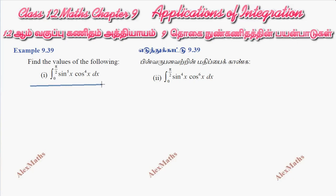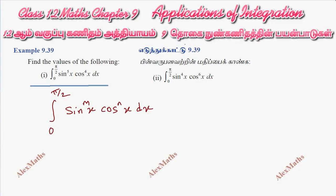First subdivision — let's compare. The general form is the integral from 0 to π/2 of sin(mx) into cos(nx) dx. If we compare, m is equal to 5 and n is equal to 4. This is an odd number and this is an even number.